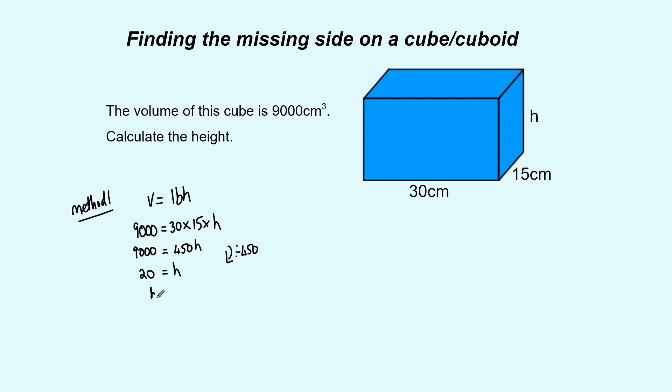You can flip that around at the end so it's h equals 20 rather than 20 equals h and that's your final answer.